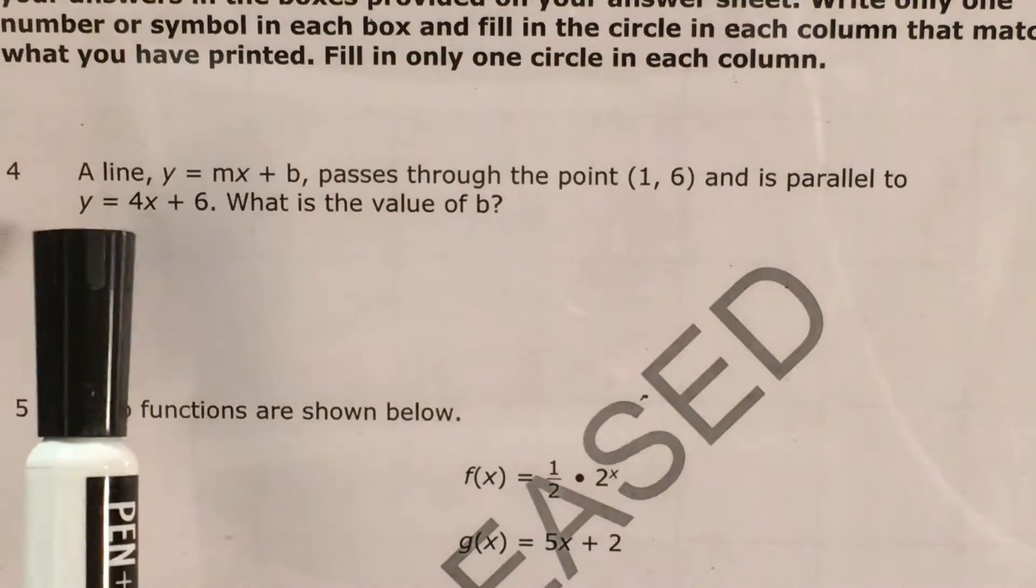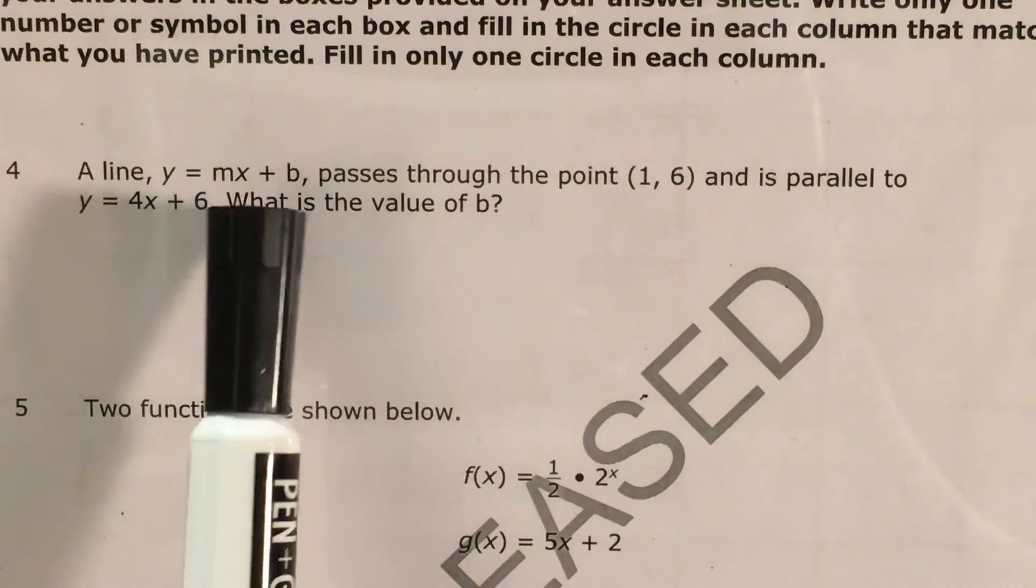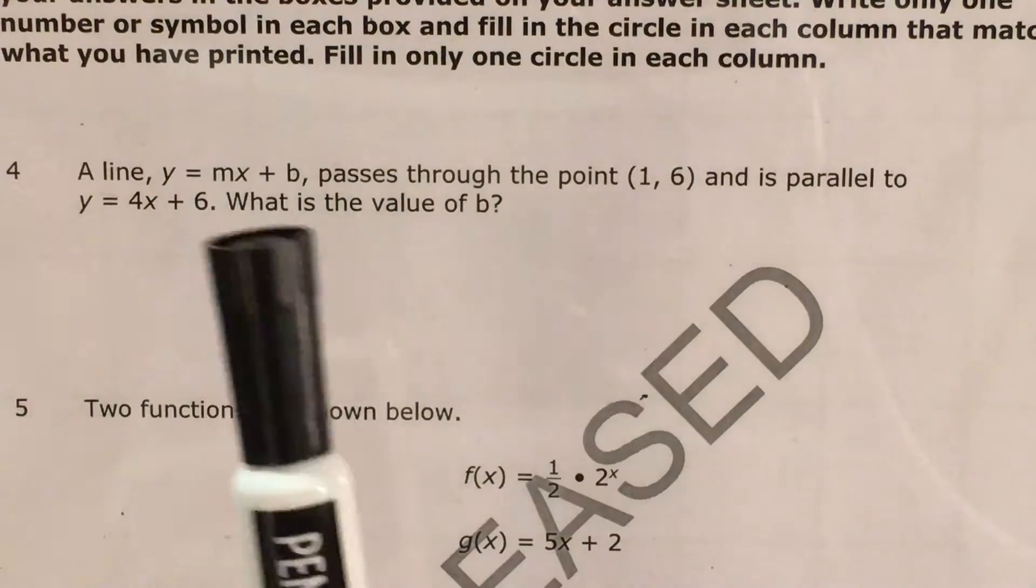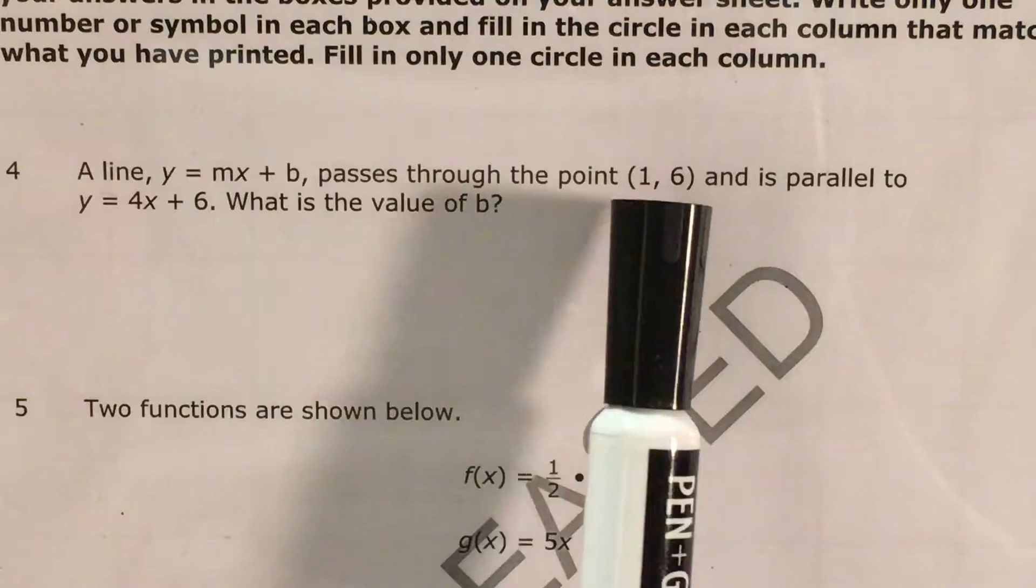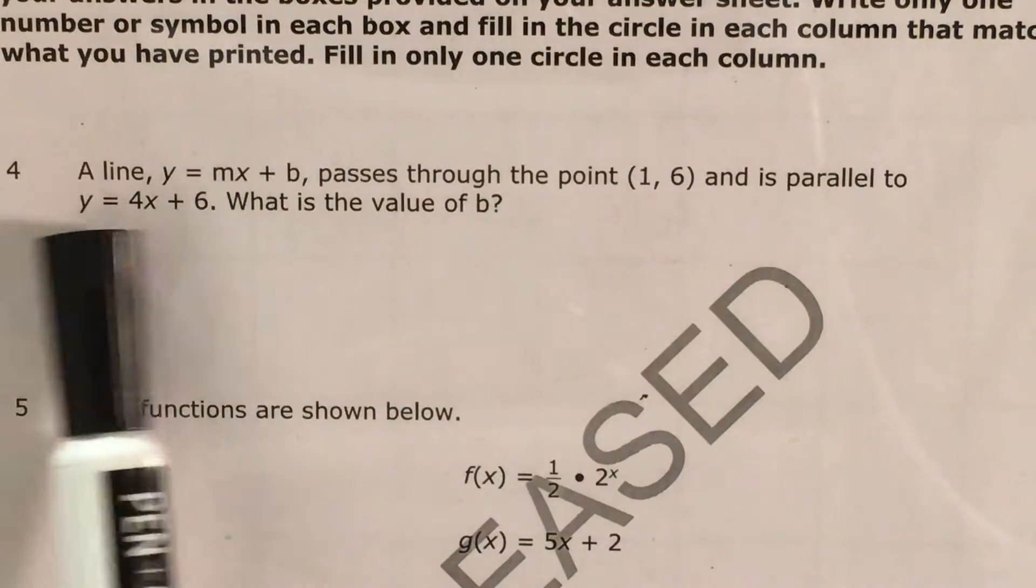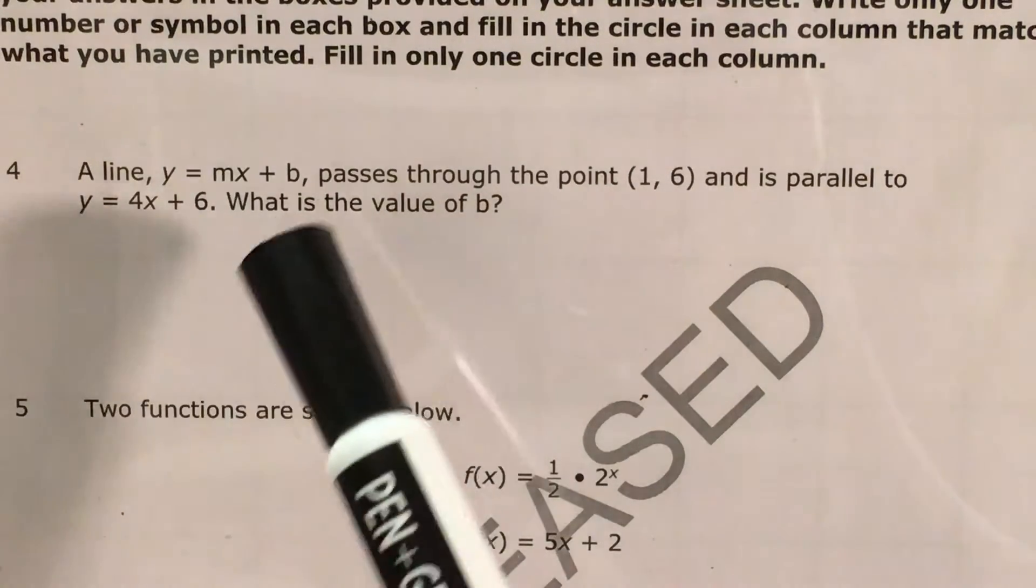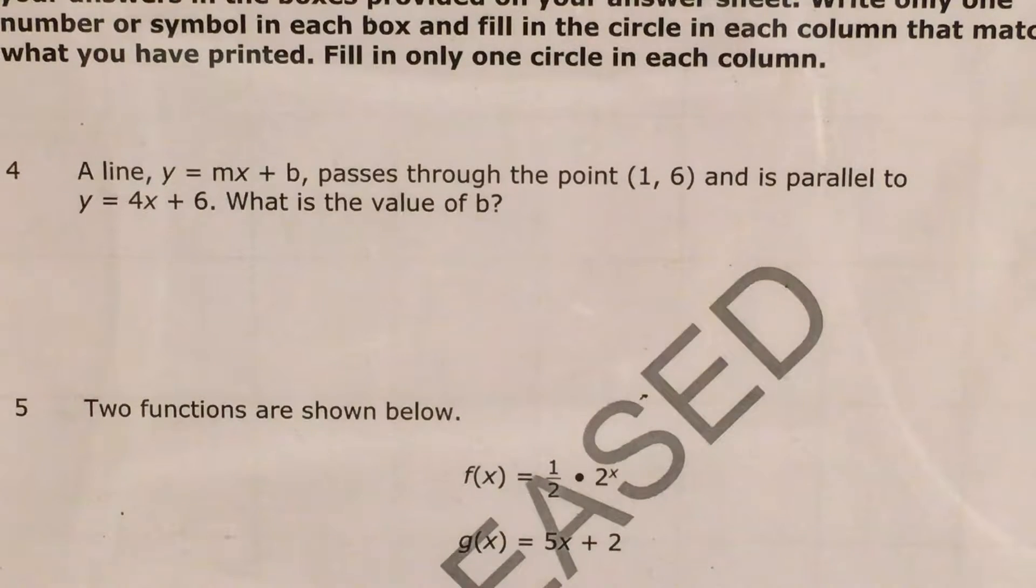Today we're going to tackle question 4 in the Math 1 questions that North Carolina released this past school year. The question tells us that we have a line, y equals mx plus b, so we don't know what the line is, but all we know is that it passes through this point and is parallel to this other line. And we're supposed to figure out the value of the number that we would add or subtract on the end of that function.